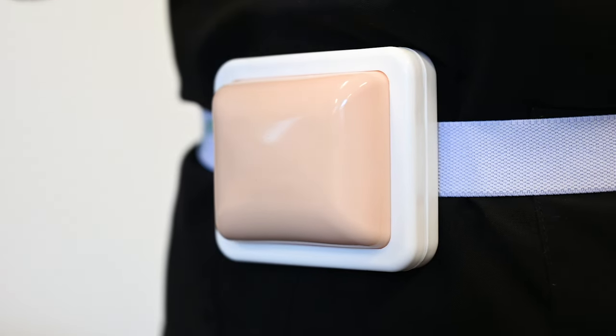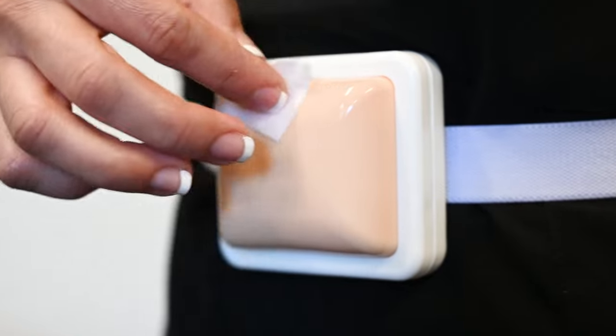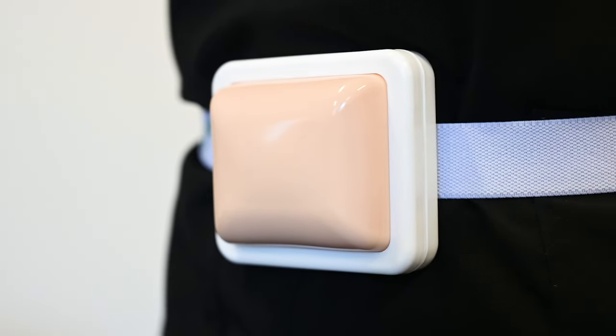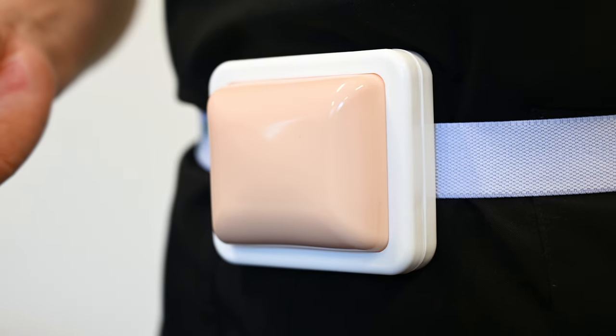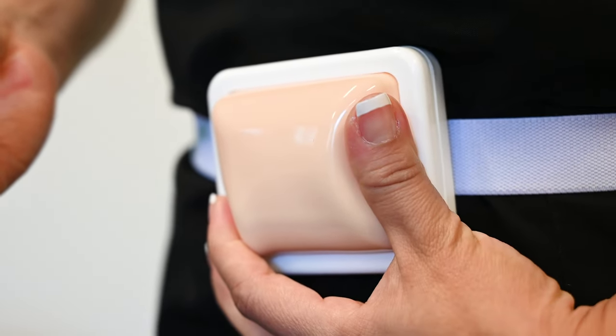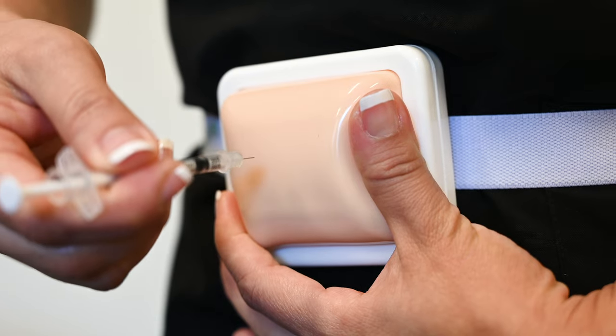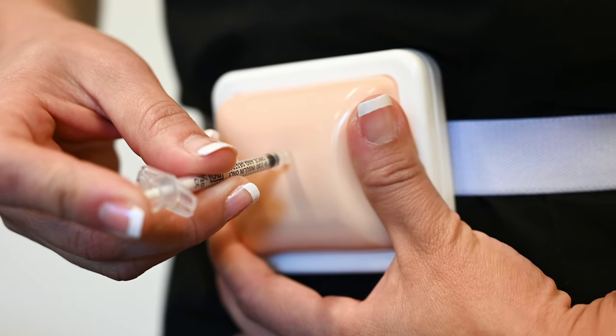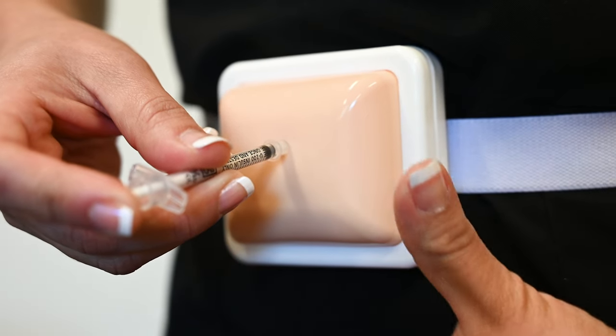First, use an alcohol wipe to clean the injection site. Hold the needle with the hand you write with. Pinch about 2-3 inches of skin. Insert the needle straight into the skin and push the plunger to inject the insulin. Let go of the skin you're pinching and pull out the needle.